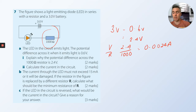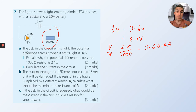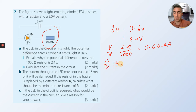That current is the same everywhere because it's a series circuit. The current in the LED must not exceed 15 milliamps, which is 15 times 10 to the minus 3 amps — that's what milli means. If the resistor is replaced with a different resistor, calculate the minimum resistance of R.